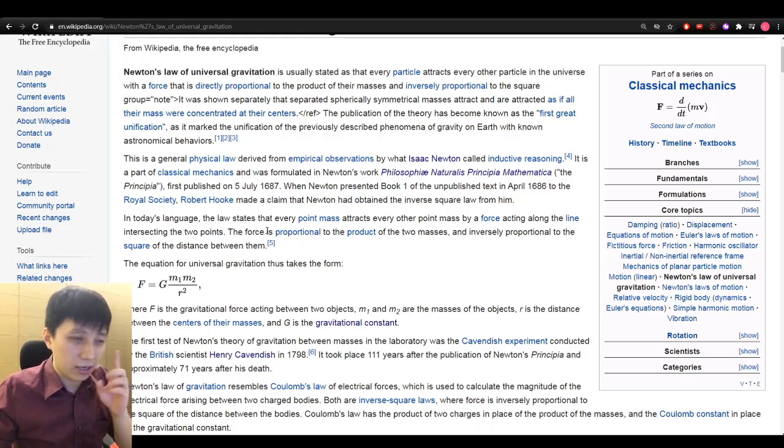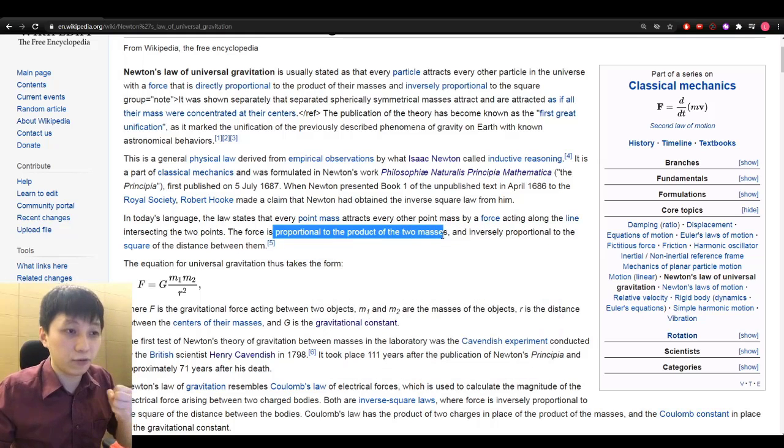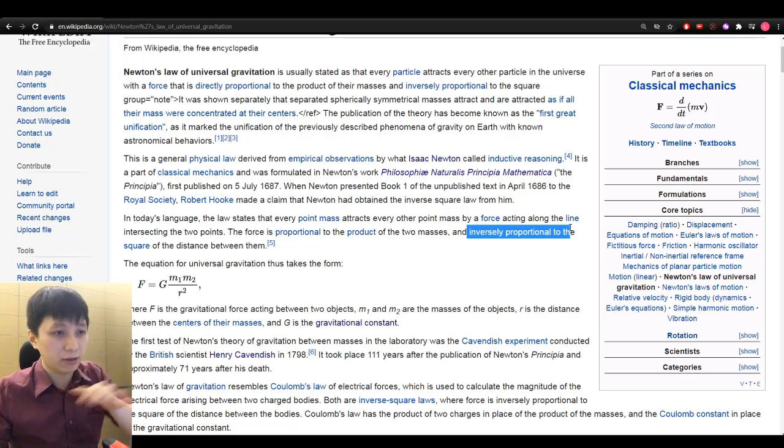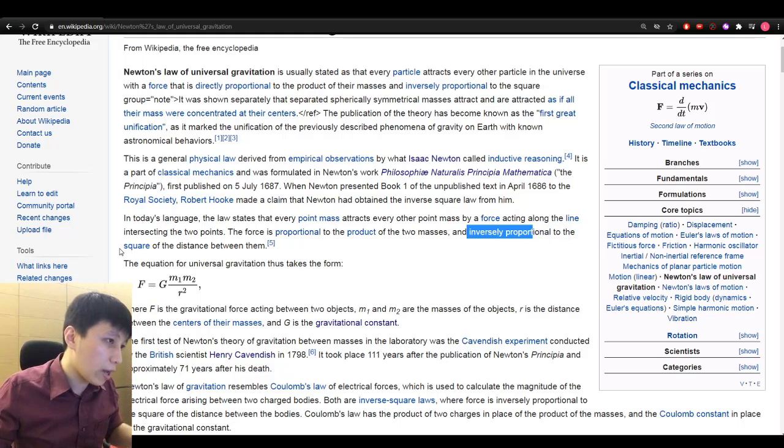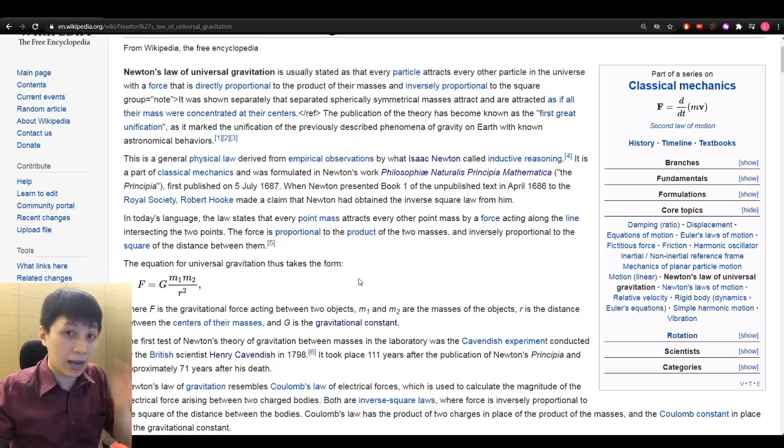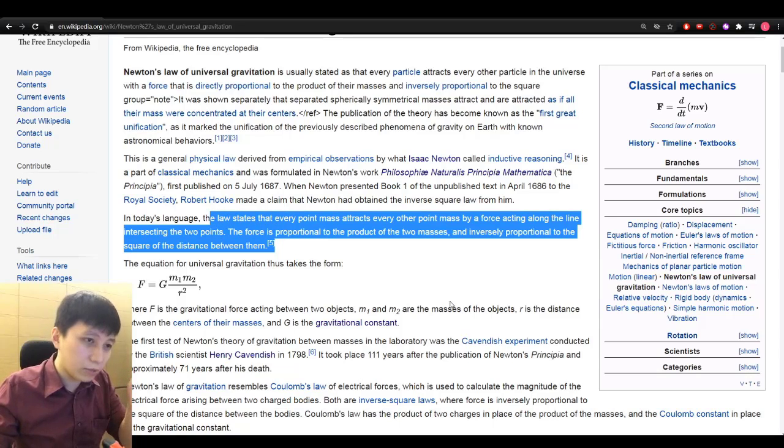The force, here is the most important part. Proportional to the product of two masses. So that means M1 times M2. So this is a wording of M1 times M2. Very essential. The other part is inversely proportional. That means one over something to the square of the distance between them. Make sure you write that square off because it's out square. So these two sentences would be sufficient for you to define this law.